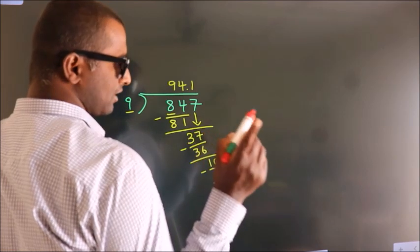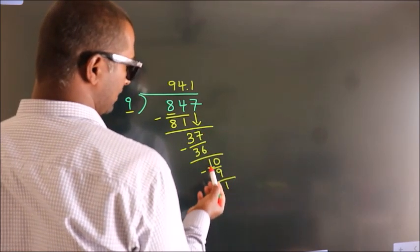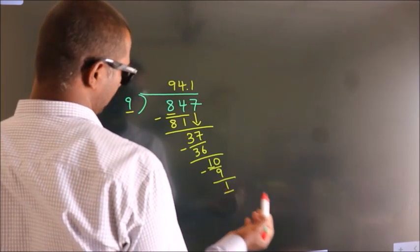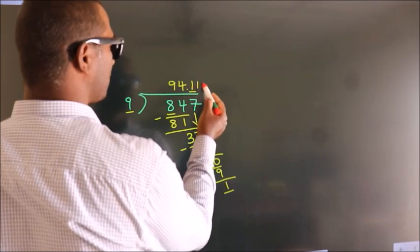Now you observe, we had 1 here and we got 1 again. That means this number will keep on repeating.